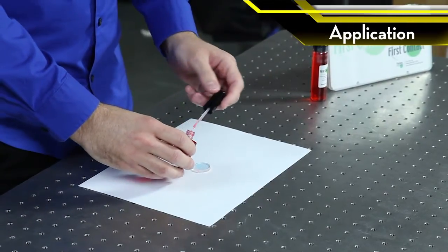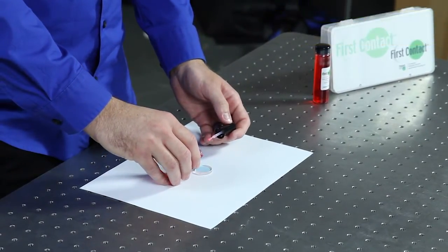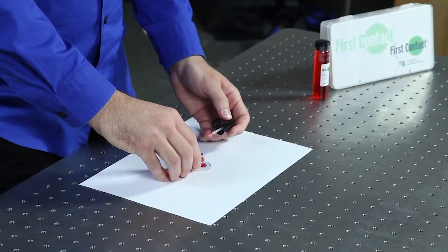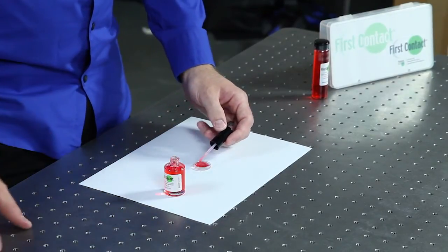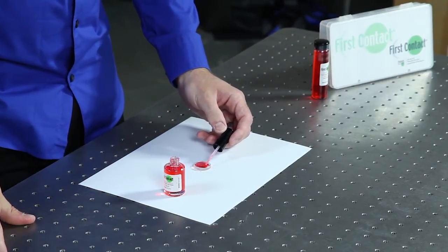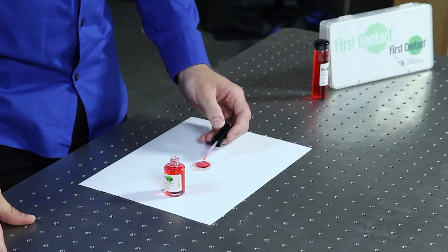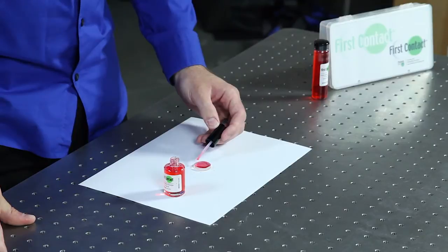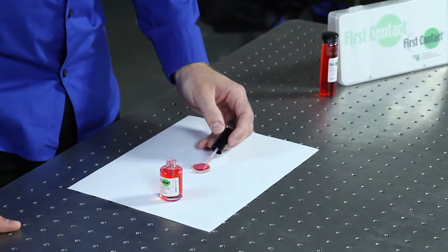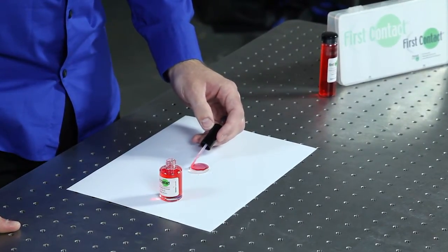The way you apply it is you just pour a generous amount on the surface, spread it gently with the brush. You just want to get to the edges, you're not agitating. The brush is not touching the surface, there's no risk of scratching, and then once it's applied you just leave it to dry in about 10 minutes or so.